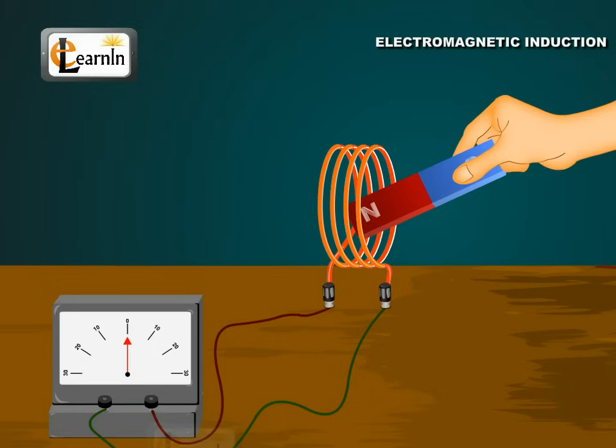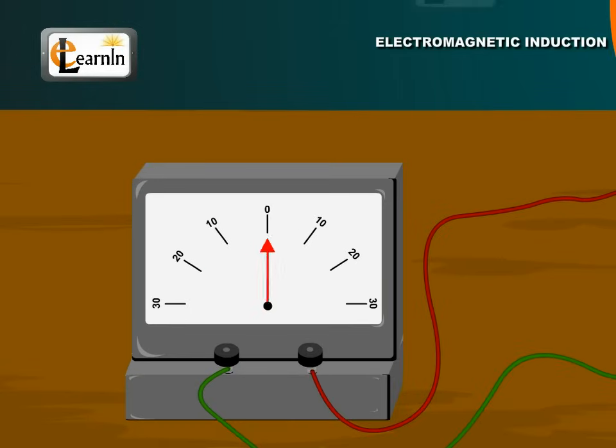You will observe a deflection in the galvanometer when the magnet is moving. The deflection indicates that current is set up in the coil.